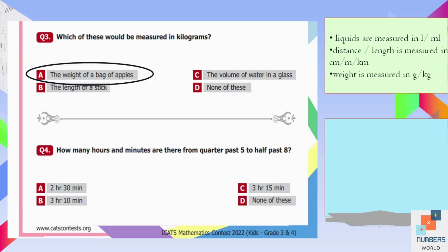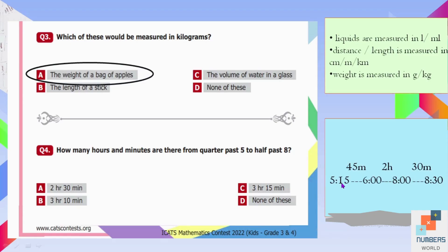Question number four: How many hours and minutes are there from quarter past five to half past eight? We make a number line: there are 45 minutes from 5:15 to 6 o'clock, two hours from 6 o'clock to 8 o'clock, and 30 minutes from 8 o'clock to 8:30.